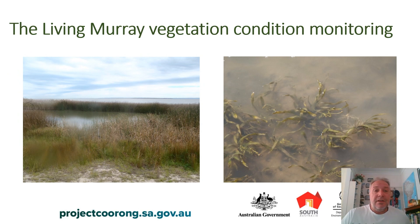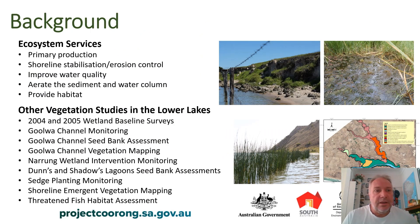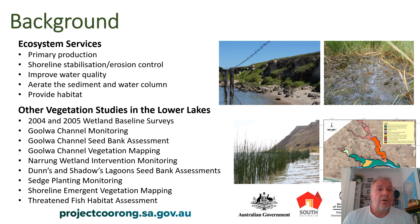We're going to start at the bottom of the food chain with the vegetation monitoring. Vegetation is an important component of aquatic ecosystems — it provides a wide range of ecosystem services, though I won't go into that in great detail today.